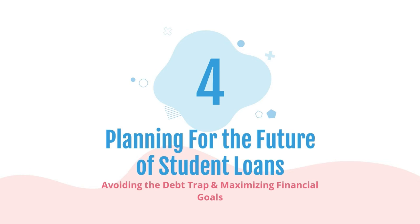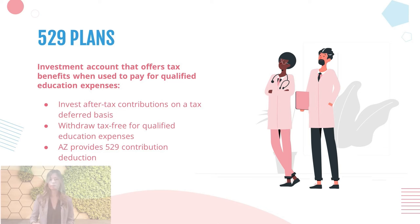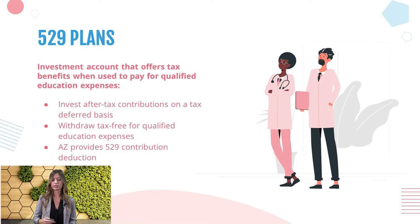Going to our fourth and final — and honestly most important — section: planning for the future of student loans and how we avoid this debt trap while maximizing our financial goals. About 50% of borrowers have delayed contributions to their retirement account, about 40% have delayed buying a home, and about 19% have postponed expanding their family. These are huge cornerstones for individual happiness and have real economic impact. The first planning tool, especially for parents or grandparents expecting their kids to go the college route, is the 529 plan.